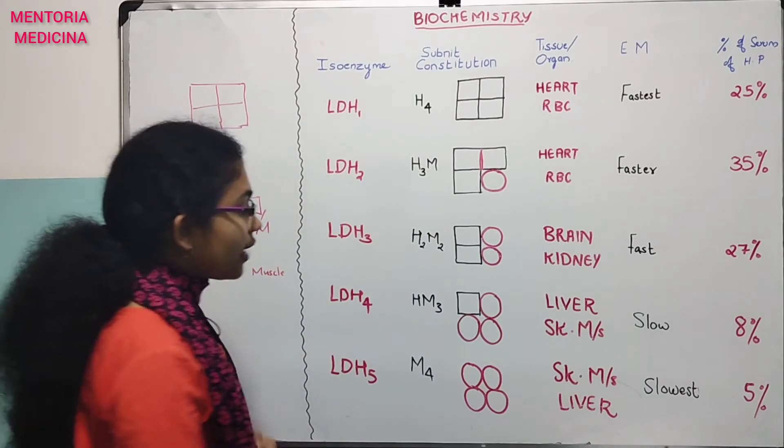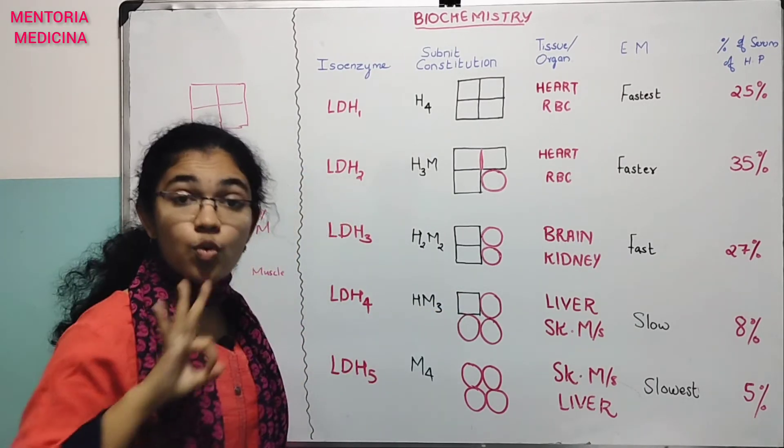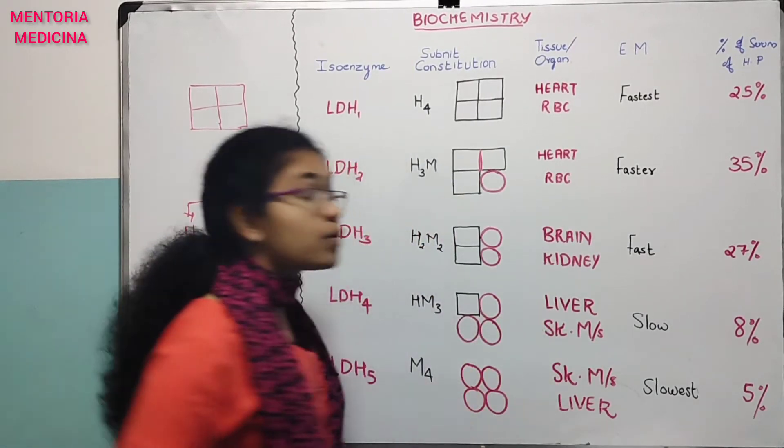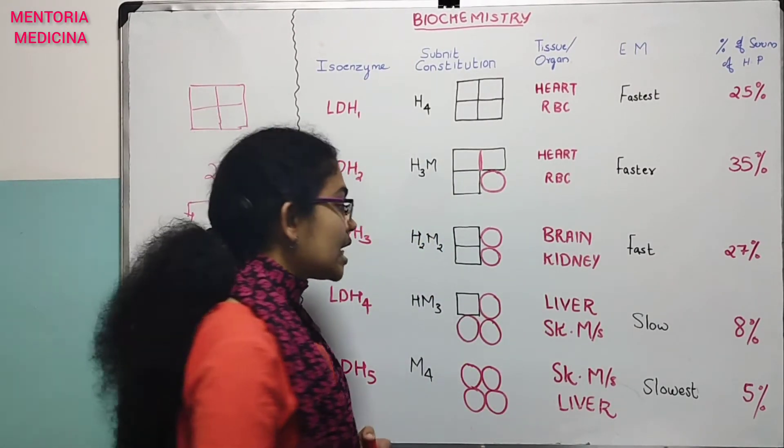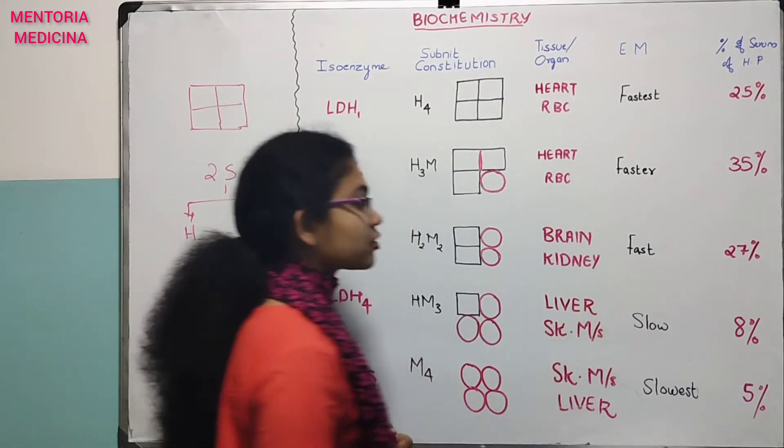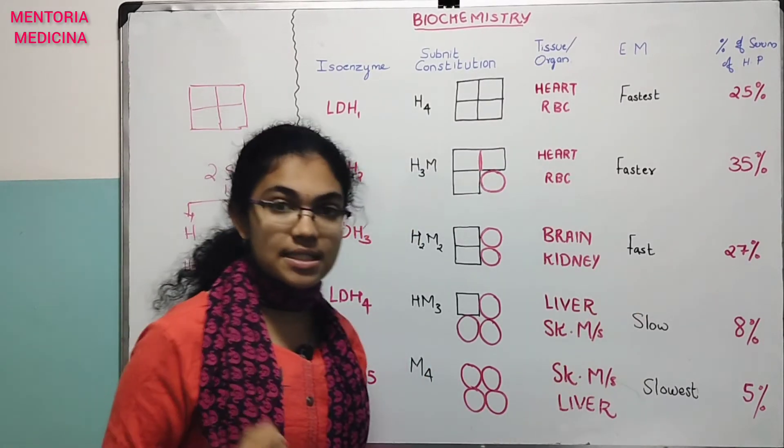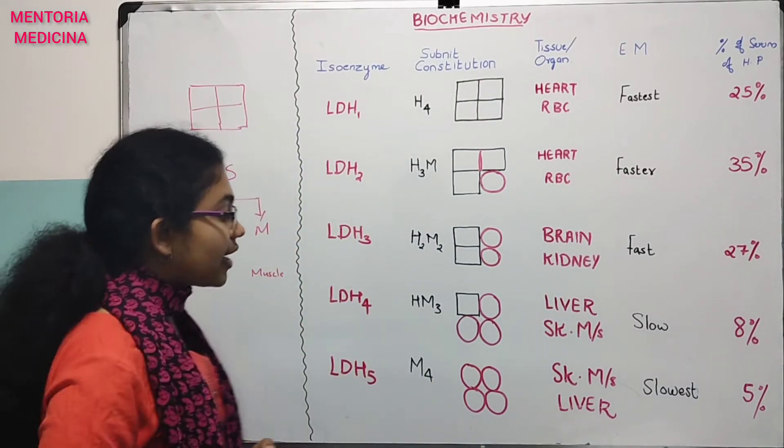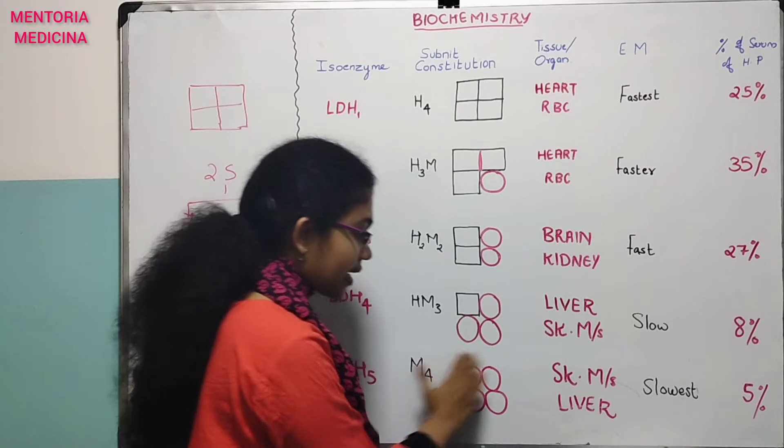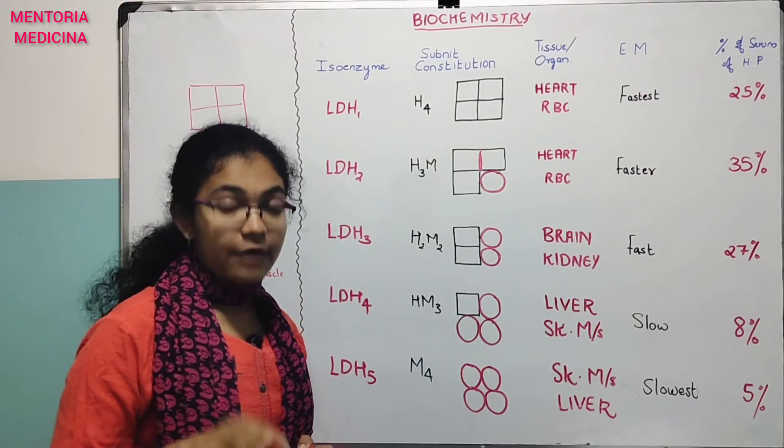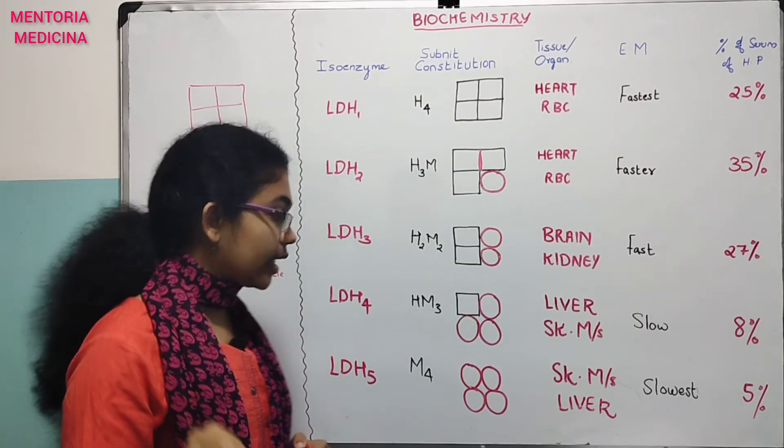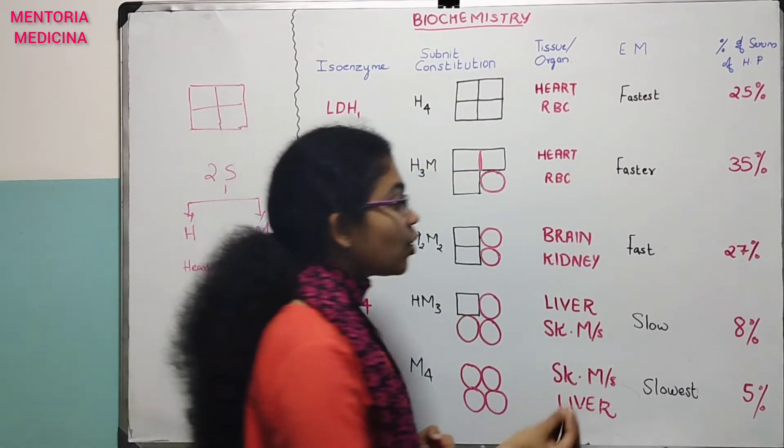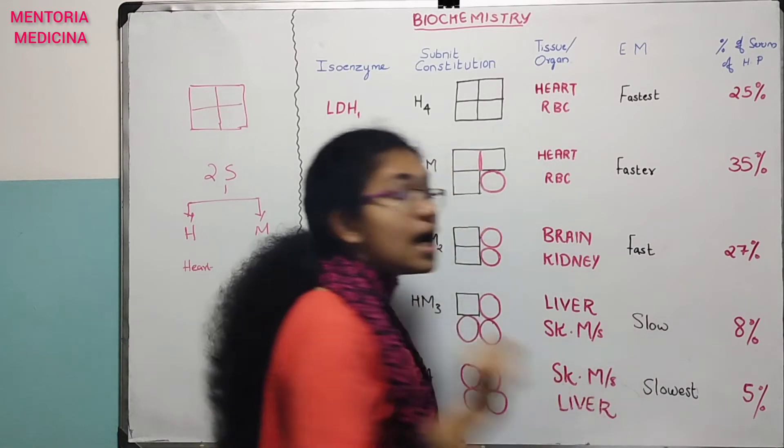LDH4 is one H subunit and three M subunits. Liver, skeletal muscle. Slow electrophoretic mobility. LDH4 is 8%.